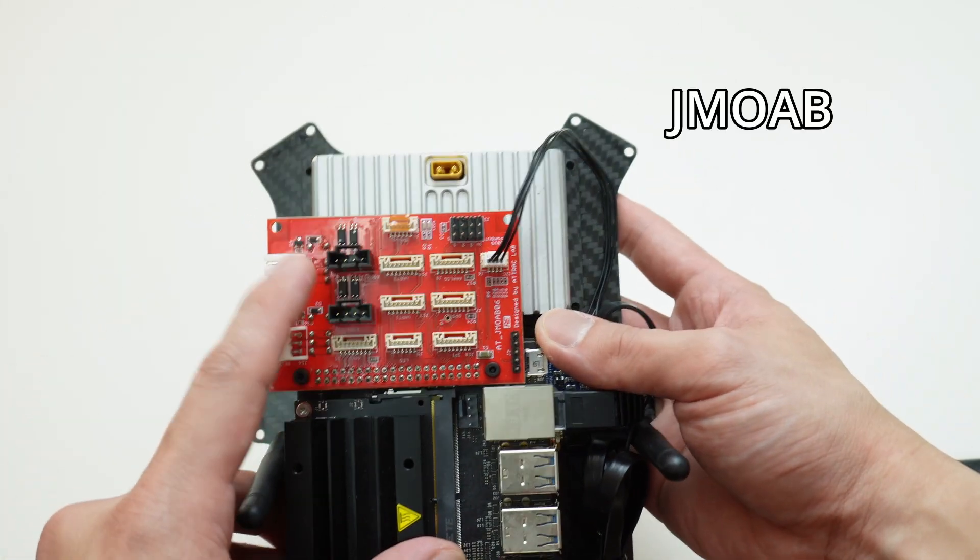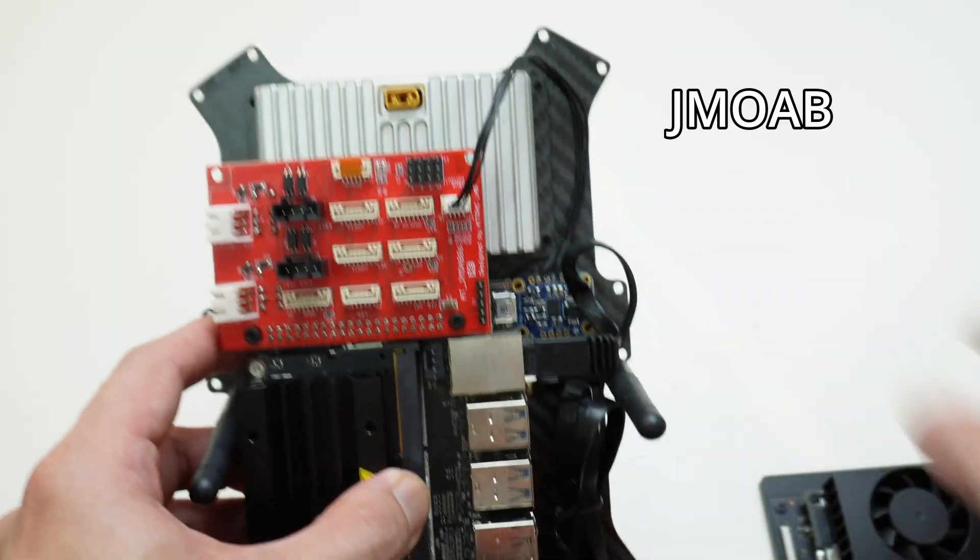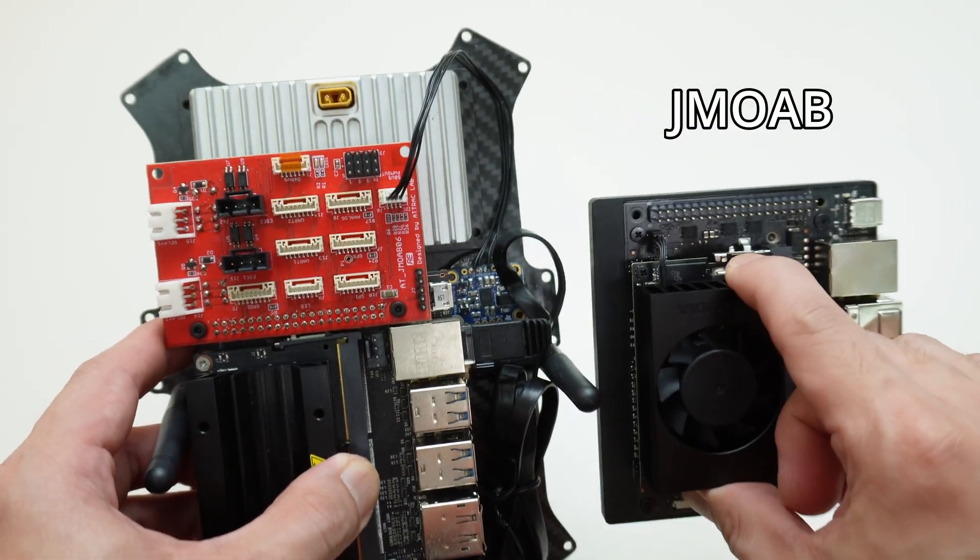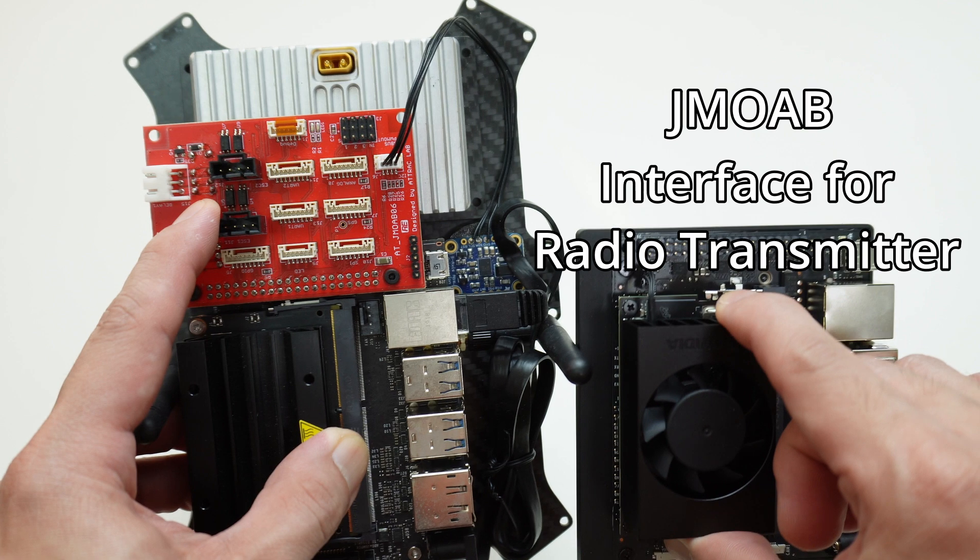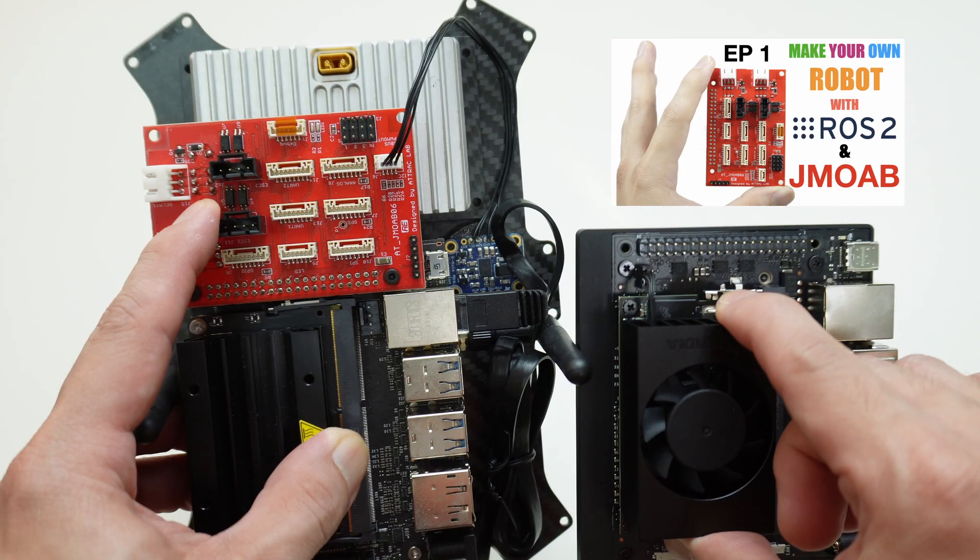The red board on top here is JMOAB, same as before. We can still use it on Orin Nano. With this board, we can get radio channels data to use for control the robot. If you wonder what is JMOAB board, please check on the video here or the link in the video description.